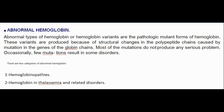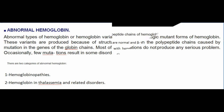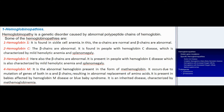Abnormal hemoglobin: abnormal types of hemoglobin, or hemoglobin variants, are pathologic mutant forms produced because of structural changes in polypeptide chains caused by mutation in globin chain genes. Most mutations do not produce serious problems; occasionally a few result in disorders. There are two categories: (1) hemoglobinopathies, and (2) hemoglobin in thalassemia and related disorders. Hemoglobinopathy is a genetic disorder caused by abnormal polypeptide chains of hemoglobin.